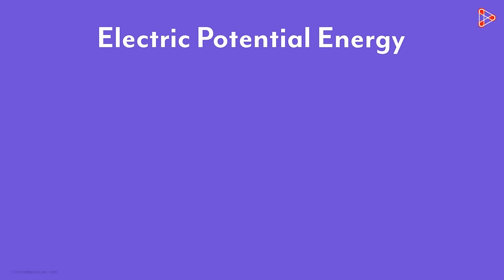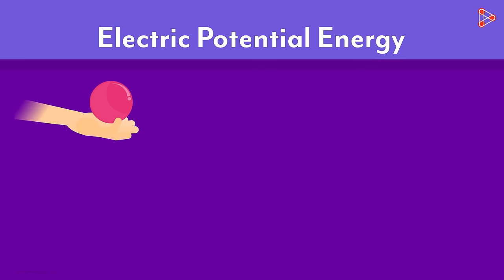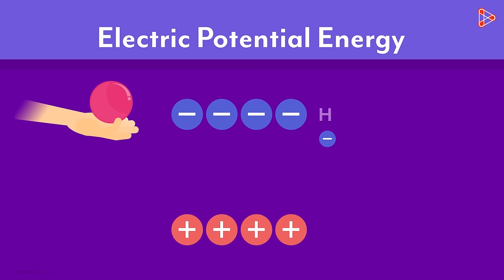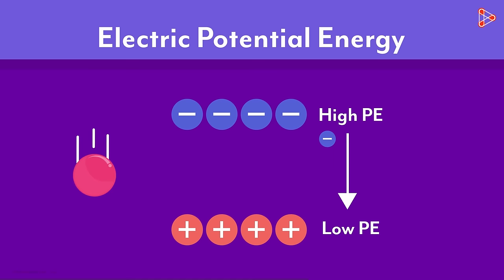Similarly, there is a concept of electric potential energy. The electric potential energy of any charge describes how much stored energy it has. Just like the ball in your hand has high potential energy, a negative charge close to another negative charge has high potential energy. If left free, the charge will be repelled by the negative charge and will move towards the positive charge, just like the ball will fall towards the earth.